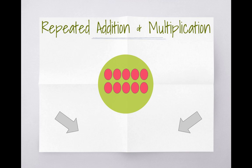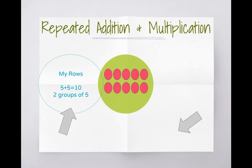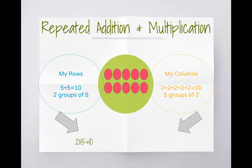Our rows had five plus five equals ten, which means we had two groups of five. That makes our multiplication sentence: two times five equals ten. This same array can also be expressed with our columns. We had two plus two plus two plus two plus two plus two, which means we have five groups of two. Therefore our multiplication sentence is five times two equals ten.